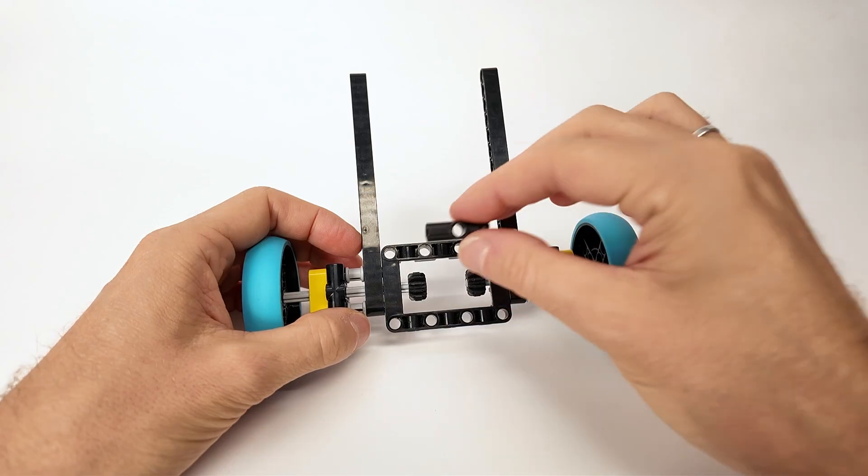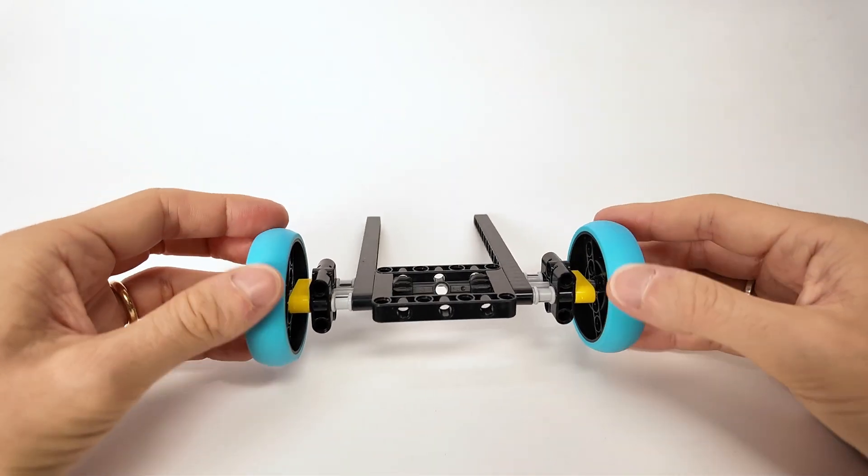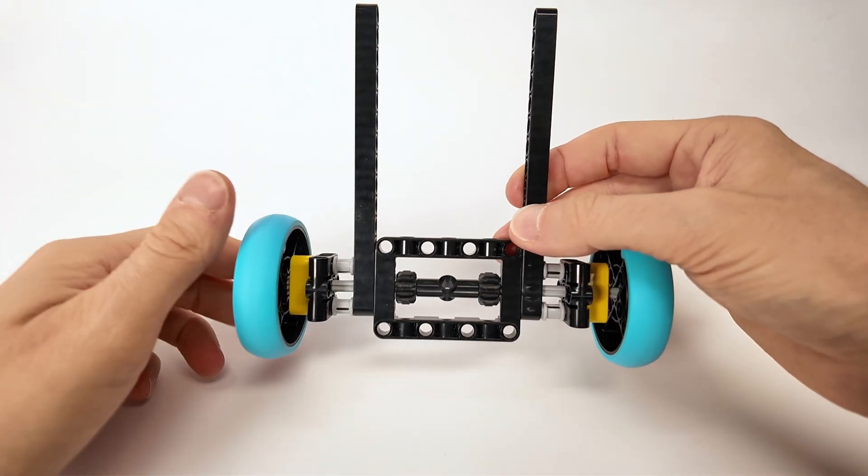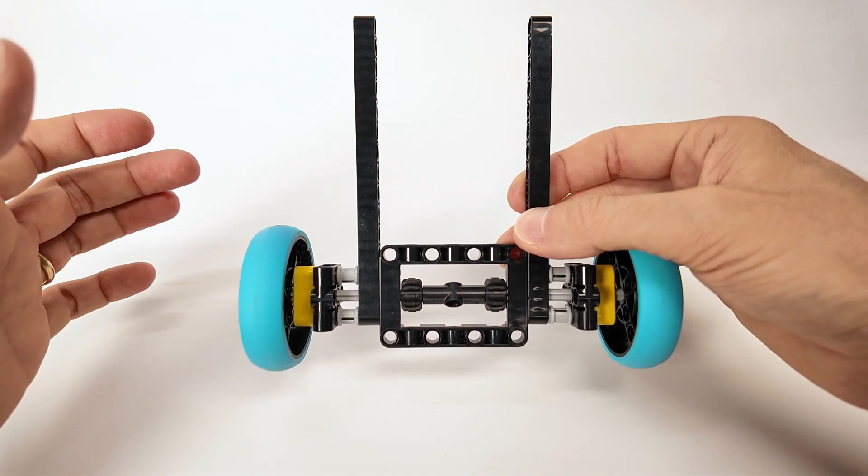So I went back to basics, and just connected both wheels' axles together. It's not perfect, I know, but for our project it gets the job done.